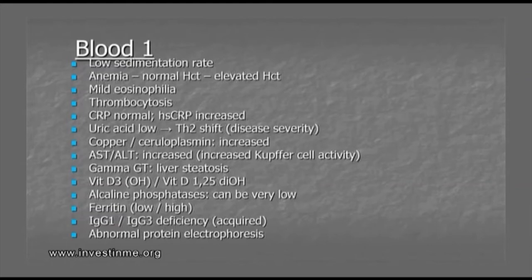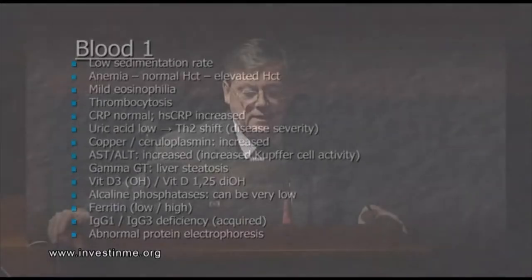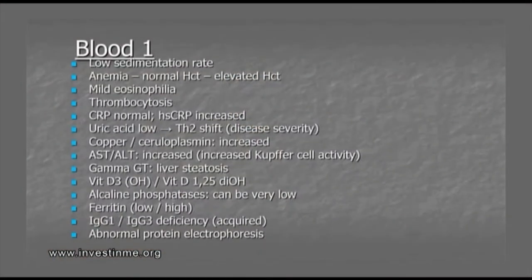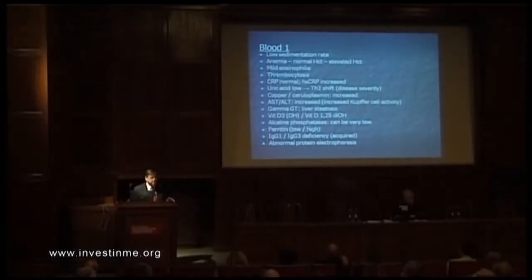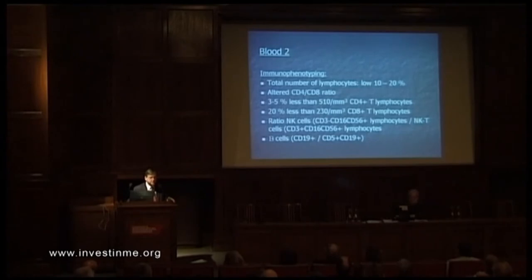We must not forget that a few percent of patients who present with a CFS-like syndrome really have an undiagnosed hemochromatosis, and it doesn't always go together with high hematocrit. We have a lot of patients with low IgG3, and some also with IgG1 deficiency, and that seems to be acquired. Also, we have a lot of patients with abnormalities in the protein electrophoresis. There is an explanation for a lot of those things.